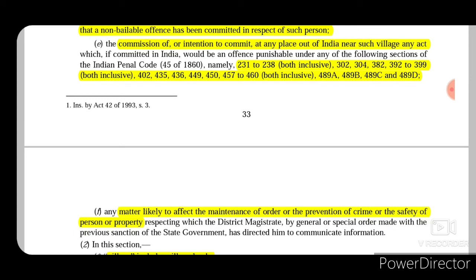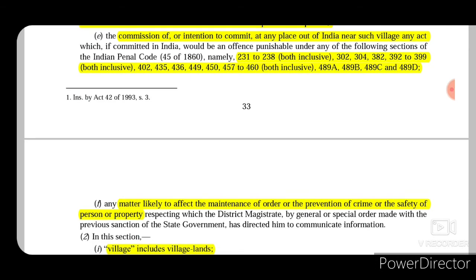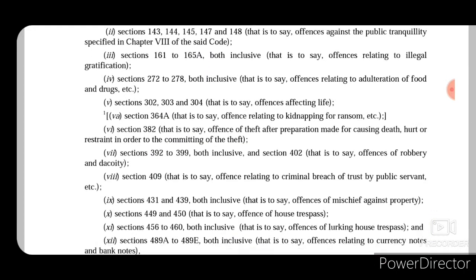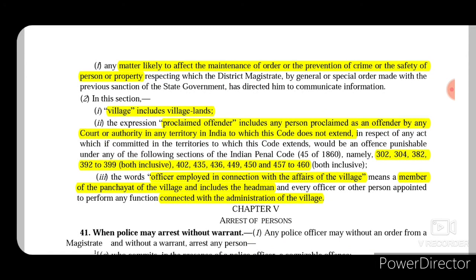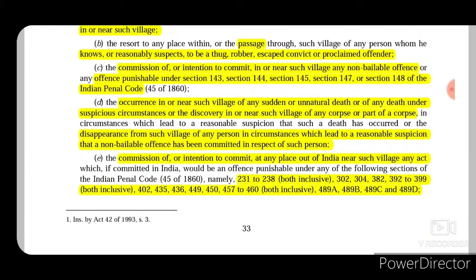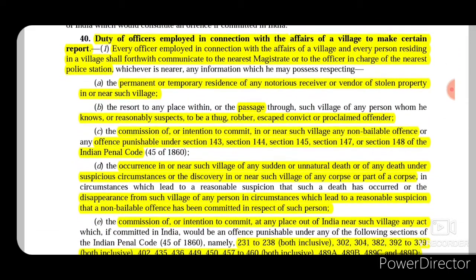Or the commission of or intention to commit at any place out of India near such village — we are talking about border areas, villages extremely close to the Indian border. If anything happens near such village which is outside the territories of India, which is an offence under sections 231 to 238, 302, 304, 382, 392 to 399, 402, 435, 436, 449, 450, 457 to 460, 489A, B, C, and D. Also any matter likely to affect the maintenance of order, prevention of crime, or the safety of person or property — such information shall also be given by the villagers or the duly appointed person.